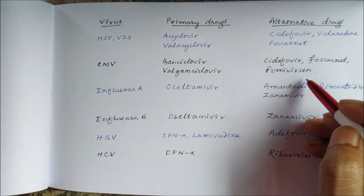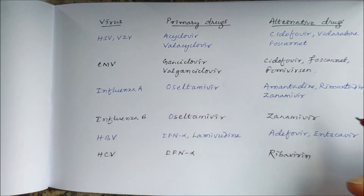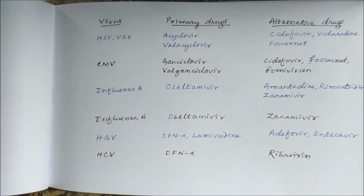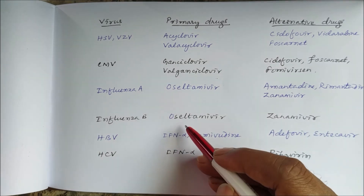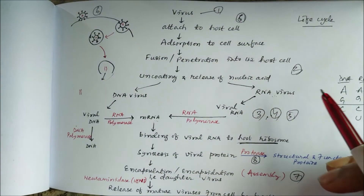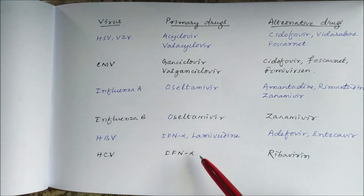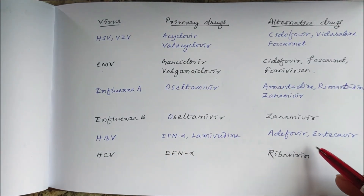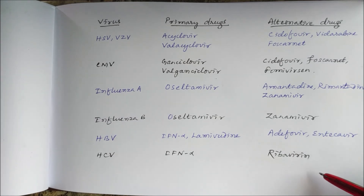Alternatives for CMV include cidofovir, foscarnet, and fomivirsen. For influenza A (H1N1/swine flu), the drug of choice is oseltamivir; alternatives are zanamivir, amantadine, and rimantadine. For influenza B, the drug of choice is oseltamivir and the alternative is zanamivir. Neuraminidase is required for viral budding and release in H1N1. For hepatitis B, drugs include interferon-alpha and lamivudine, with alternatives adefovir and entecavir. For hepatitis C, the drug of choice is interferon-alpha and the alternative is ribavirin.